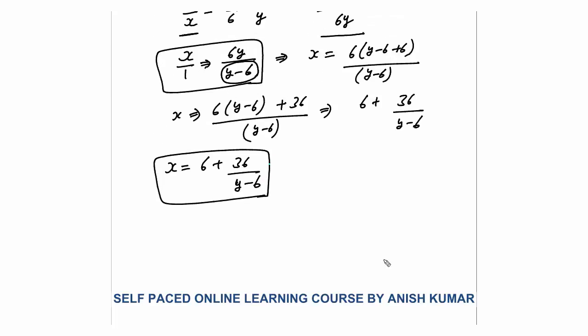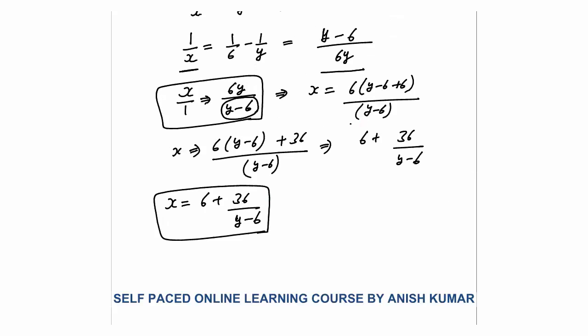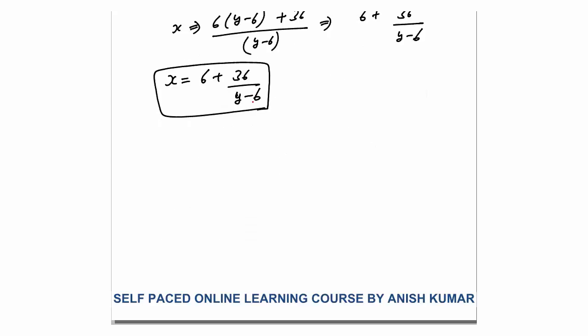So first we separate the variable, then we make the denominator expression appear in the numerator and simplify to get x = 6 + 36/(y − 6). Since x and y are positive integers, y − 6 must completely divide 36 — that is, y − 6 must be a factor of 36.